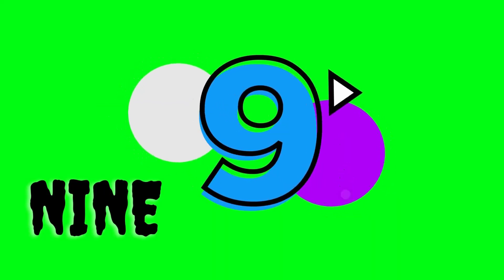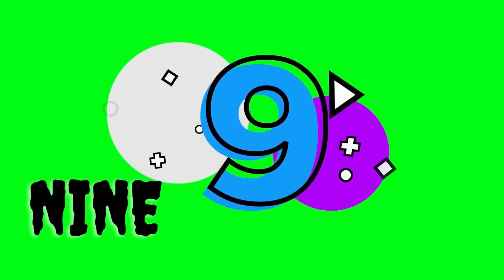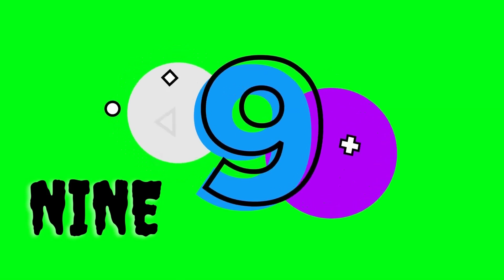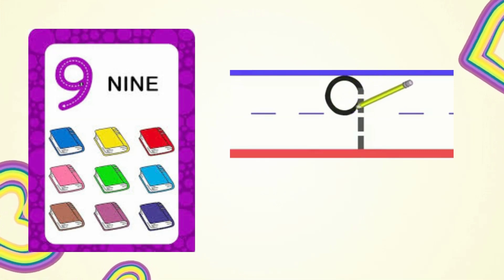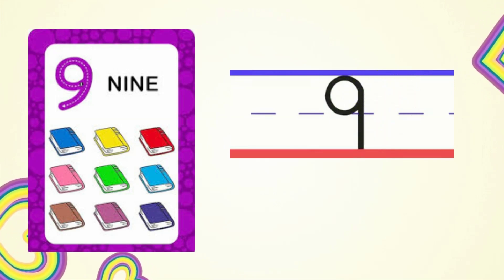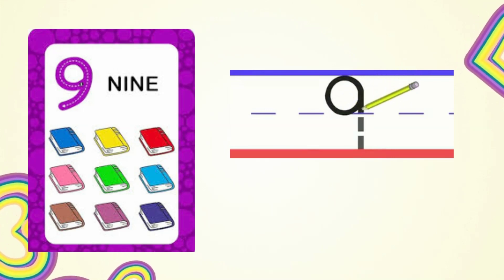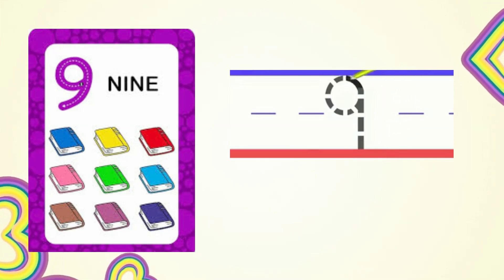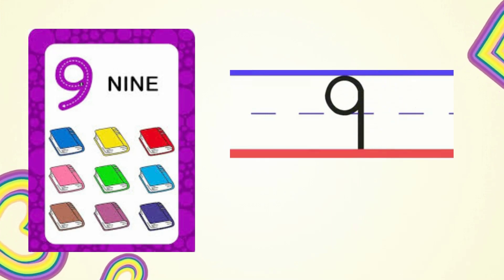Number 9. N-I-N-E, 9. Let's count the flowers: 1, 2, 3, 4, 5, 6, 7, 8, 9. To write number 9, we will start at the top and curve all the way around. Then we will do a straight line down to the bottom.